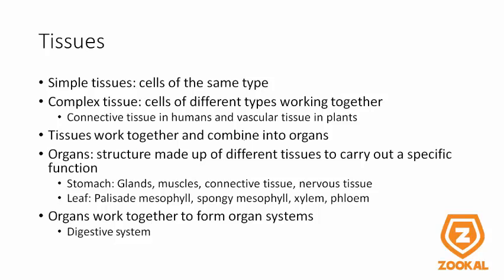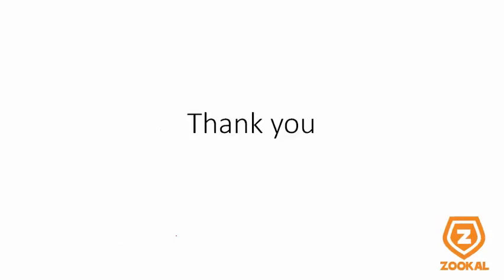Tissues combine into organs, which are structures made of different tissues to carry out specific functions, such as the stomach, which is an organ containing glandular tissue, muscle tissue, connective tissue, and nervous tissue. The leaf is an organ containing palisade mesophyll tissue, spongy mesophyll tissue, xylem tissue, and phloem tissue. Organs work together to form organ systems, such as the digestive system which contains the stomach and intestines. Thank you for your attention.